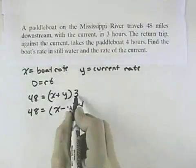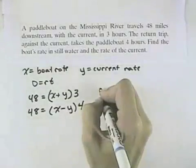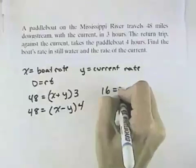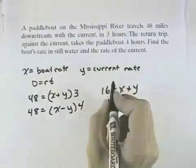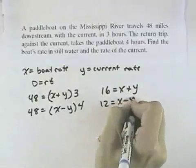I could divide both sides by 3 in the first equation so that I get 16 equals x plus y, and in the second equation I could divide by the 4 to get 12 equals x minus y.